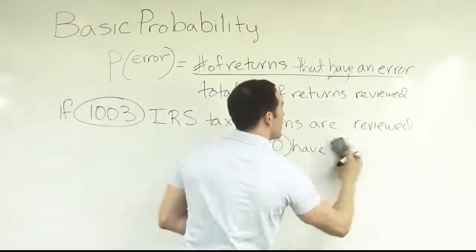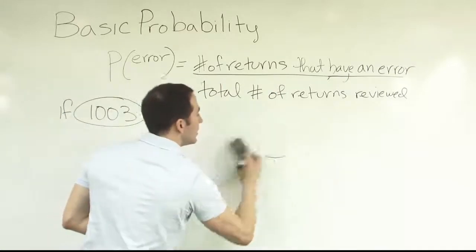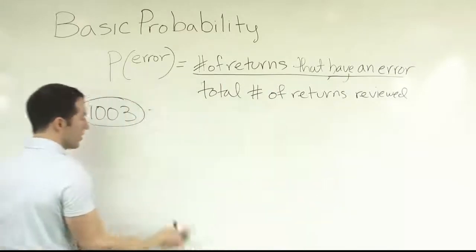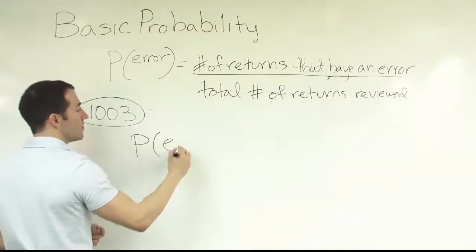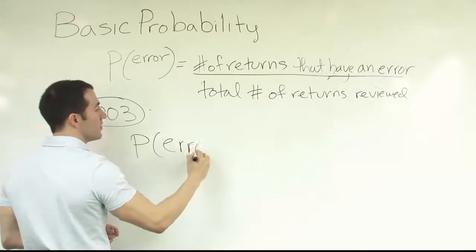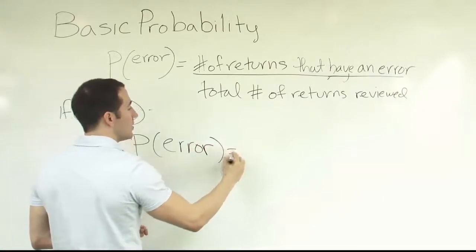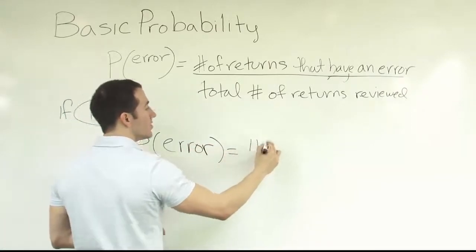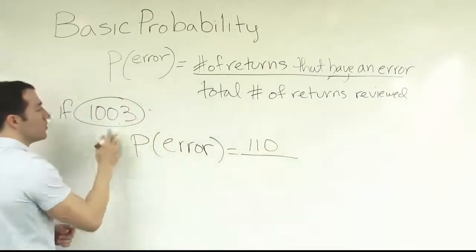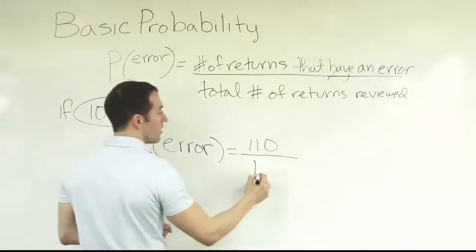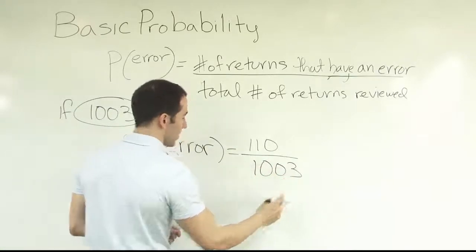Forming our fraction, we say the probability of an error is equal to 110 divided by the total number of observations, 1003.